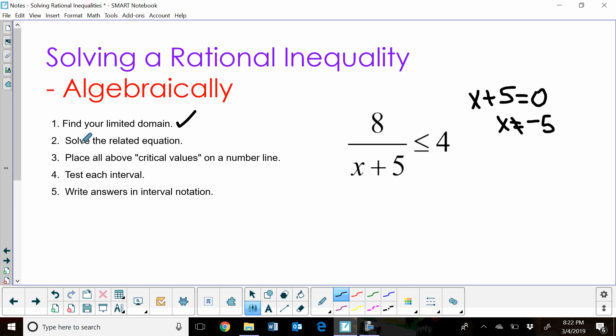The next thing we want to do is solve what's called the related equation. We're going to take this inequality and change it to an equal sign and treat it as if it's an equation versus an inequality. And this one's pretty easy because we can just set it up as a proportion.